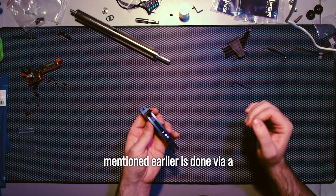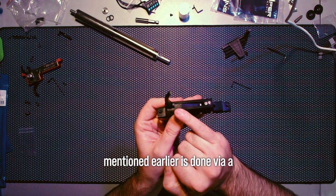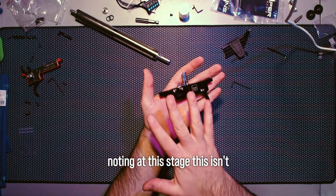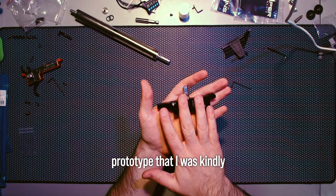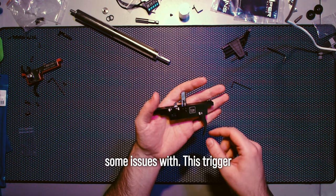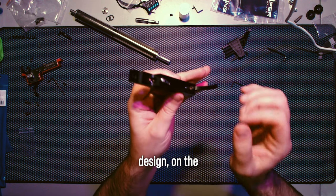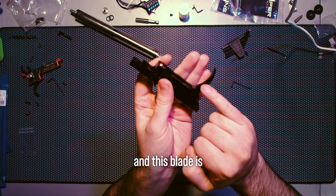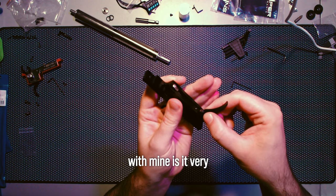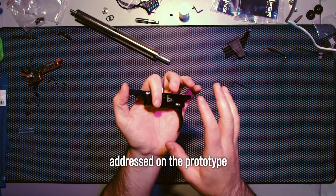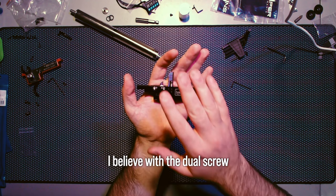Trigger pull is done via a small screw in here. It's worth noting this isn't the final design, this was a prototype. This trigger blade is interchangeable and held in with one screw here. What I found with mine is it very quickly loosens itself, so the trigger wobbled side to side. That's been addressed on the prototype with a dual screw design.